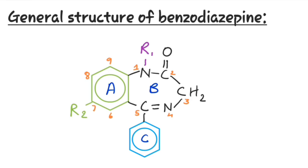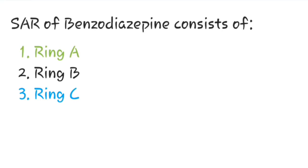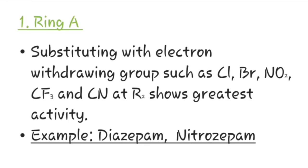This is the general structure of benzodiazepine which consists of three rings: ring A, ring B, and ring C. In ring A, R2 could be substituted, and in ring B, R1 could be substituted. The SAR of benzodiazepine consists of ring A, ring B, and ring C.